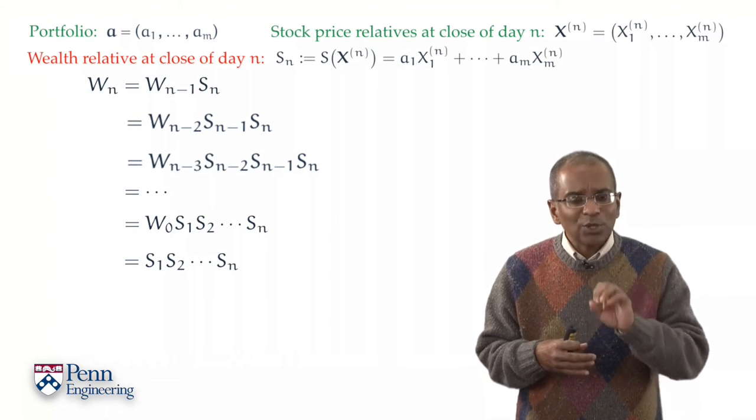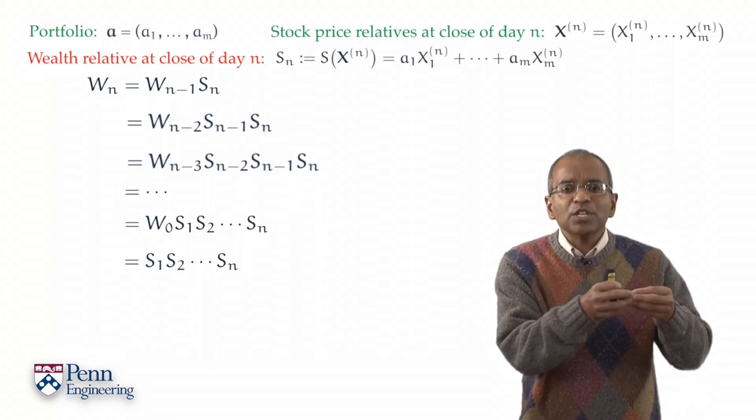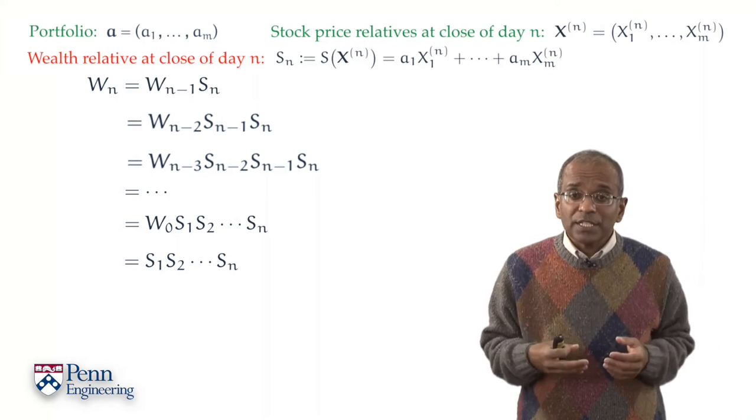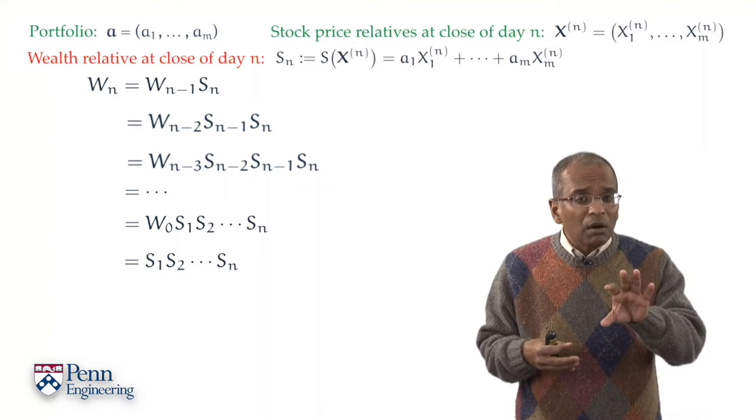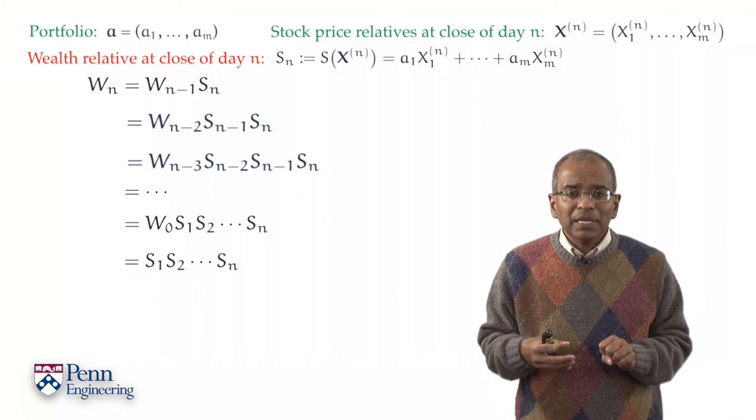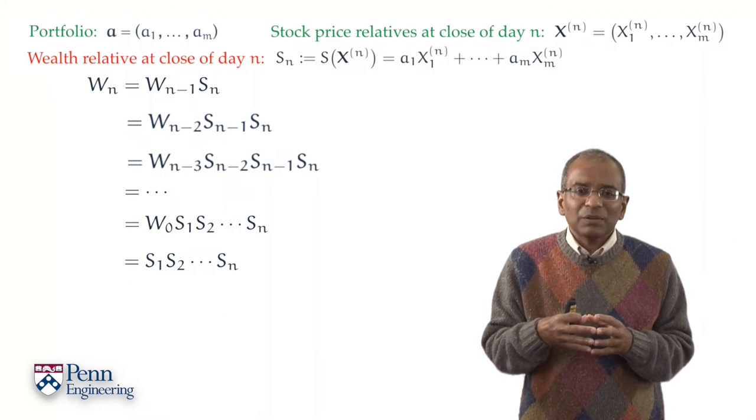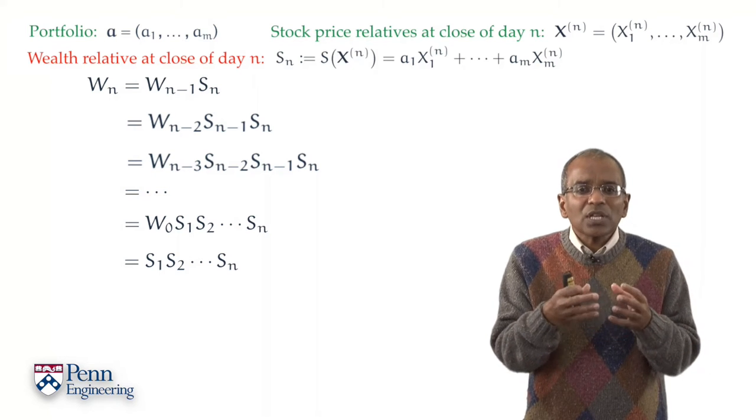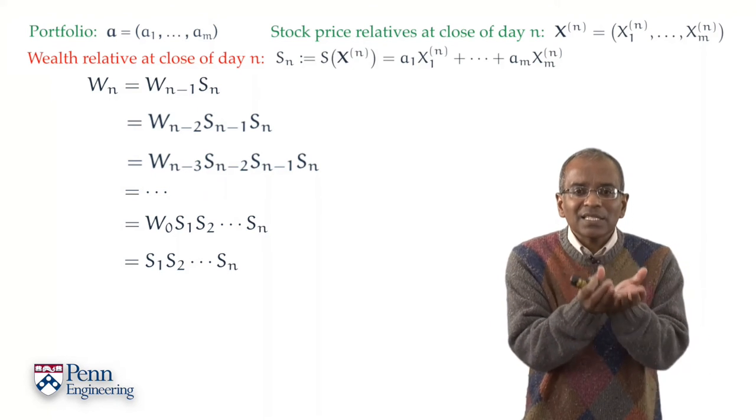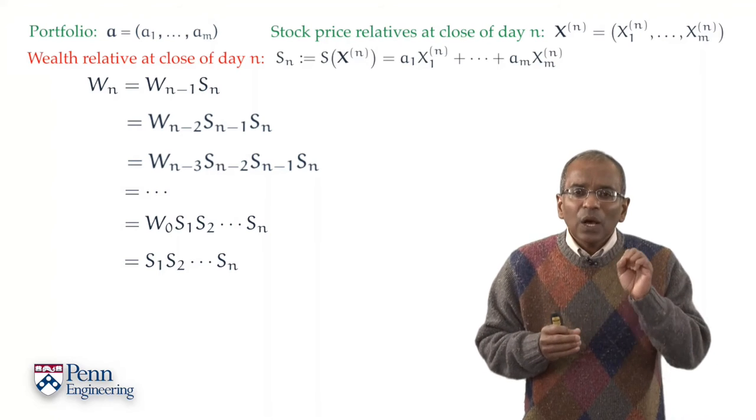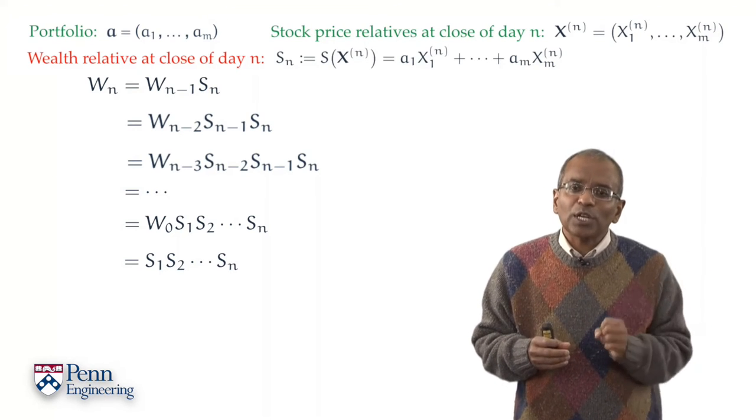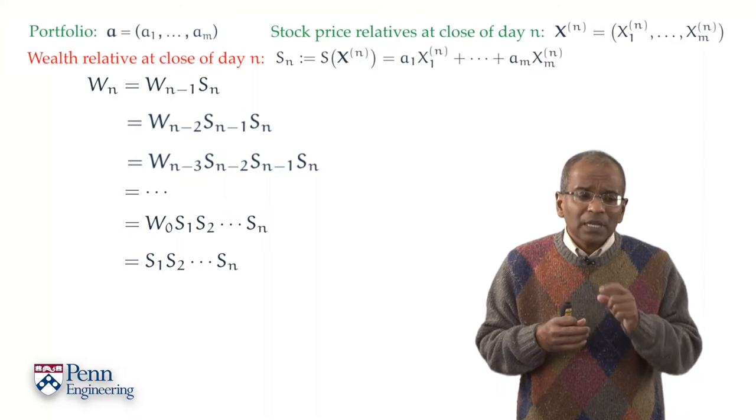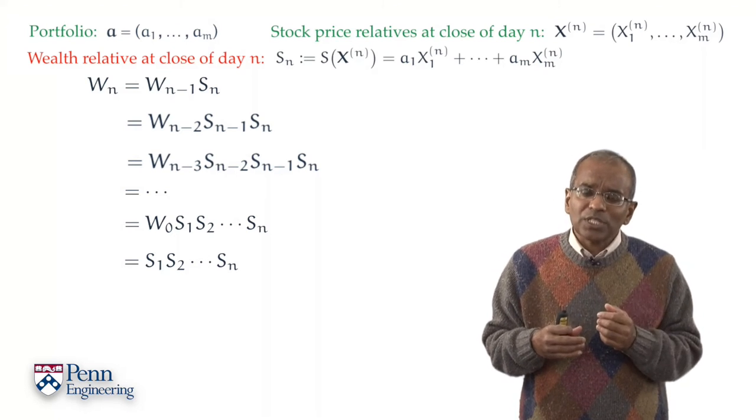If one were to quibble at all, it is because the expression on the right is a product. It's a product of chance driven entities. And products are nice and elegant and fairly simple to describe, but we might worry that handling a product is a lot harder than handling a sum. Wouldn't it be nice if instead of a product on the right we actually had a sum?